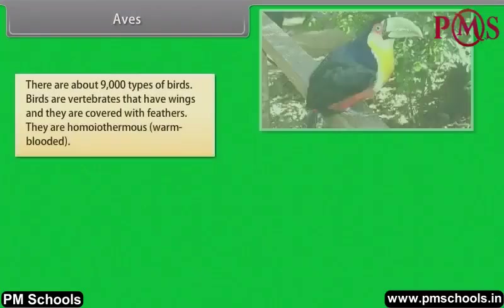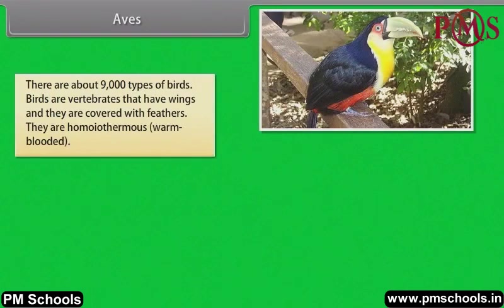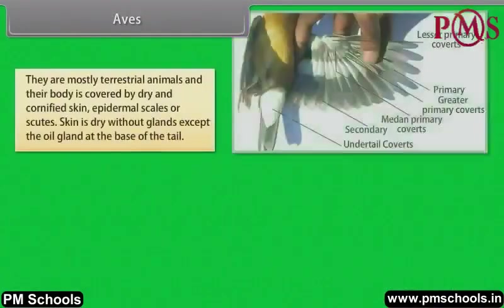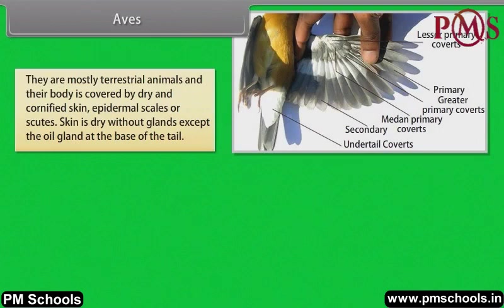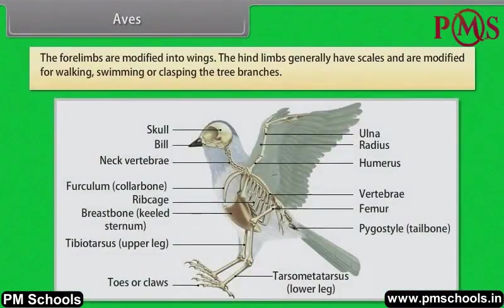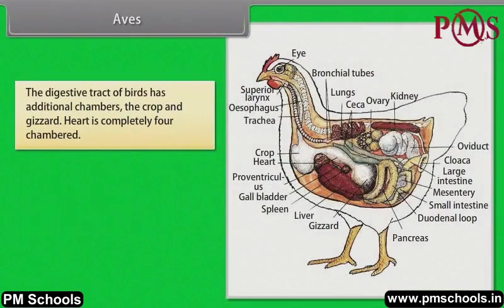Aves. There are about 9,000 types of birds. Birds are vertebrates that have wings and they are covered with feathers. They are homeothermous or warm-blooded. The bird's skeleton is very light in weight, which helps them to fly, except flightless birds like ostrich. Endoskeleton is fully ossified (bony) and the long bones are hollow with air cavities (pneumatic). The forelimbs are modified into wings. The hind limbs generally have scales and are modified for walking, swimming or clasping tree branches. The digestive tract of birds has additional chambers: the crop and gizzard.